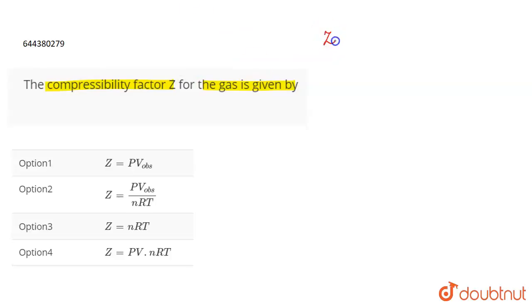We'll talk about the compressibility factor Z, and this is actually equal to the real volume divided by the ideal volume. You can also say that V observed divided by V ideal. Because the volume that we observe is actually the real volume, that is why we have replaced real with observed here.